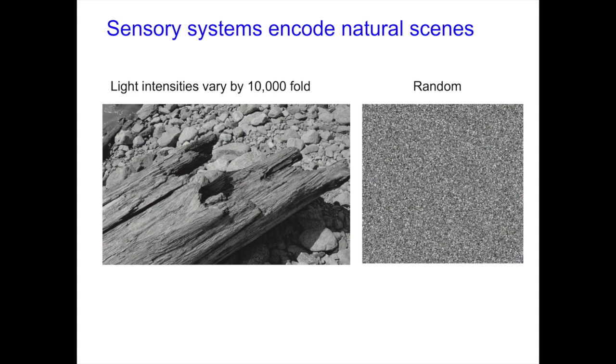In a chemical gradient, runs are elongated up the gradient in a favorable direction and shorter down the chemical gradient if the cell goes in the wrong direction. The question is what physical constraints shape this behavior. When we talk about chemotaxis, we're really talking about sensory systems — and what are sensory systems for? They encode natural stimuli and natural scenes.